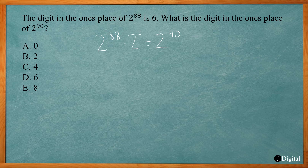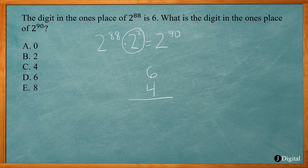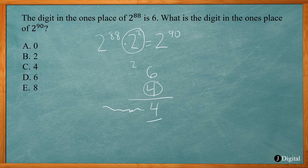So if 2 to the 80th power ends with 6, you're basically multiplying it by 2 to the 2nd, or 4. You multiply it by 4. When you multiply that out, you get 6 times 4 is 24. You put the 4 down and carry the 2. Since you're only multiplying by 1 digit, you only have one row of numbers. So your 1's digit will be 4.